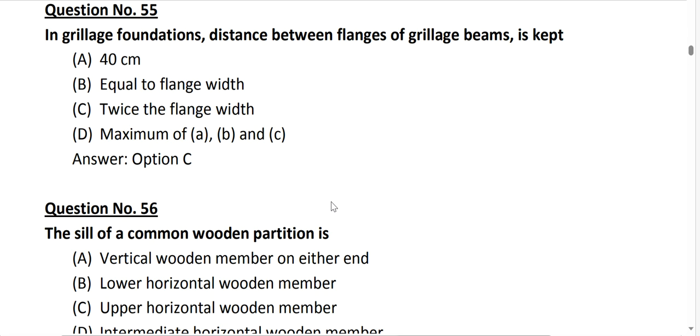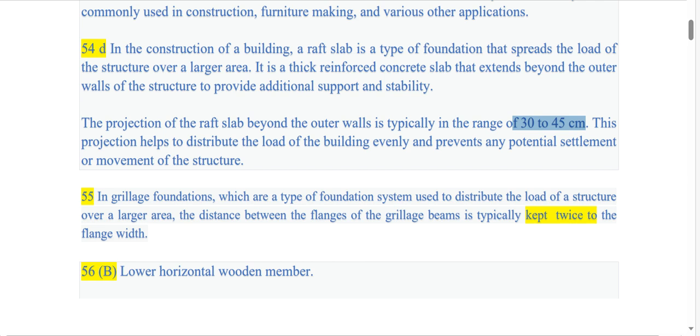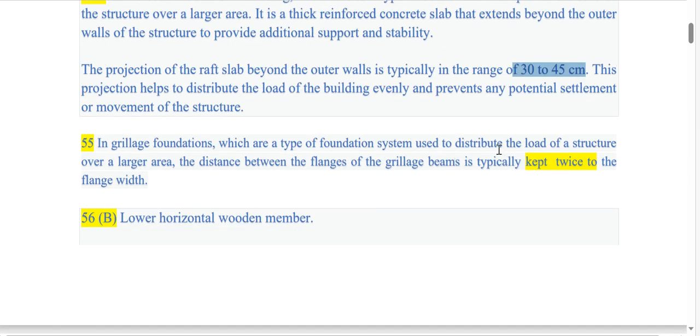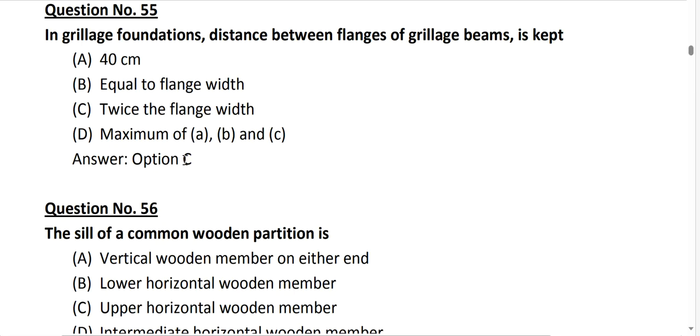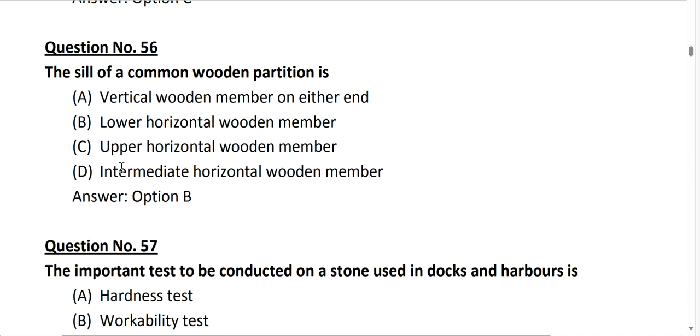In the construction of raft, the raft slab beyond the outer walls is typically in the range 30 to 45 centimeter. This projection helps to distribute the load of the building evenly and prevents any potential settlement or movement of the structure. Next question number 55, in a grillage foundation the distance between the flanges of grillage beam is kept equal to the flange width. So option C is correct.